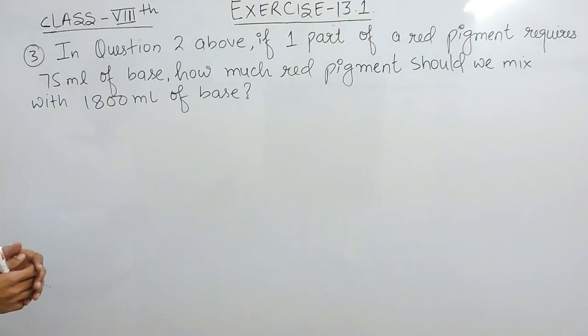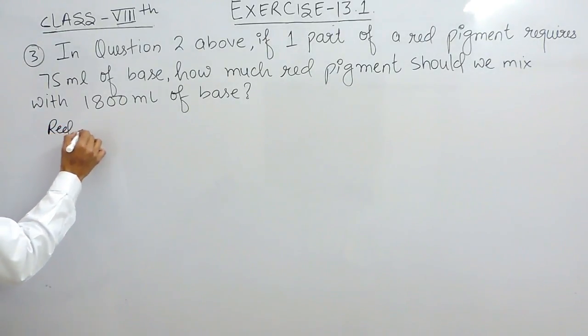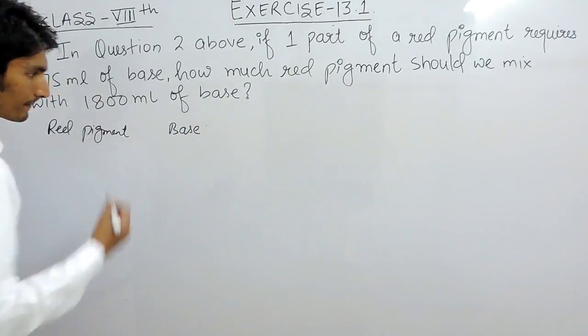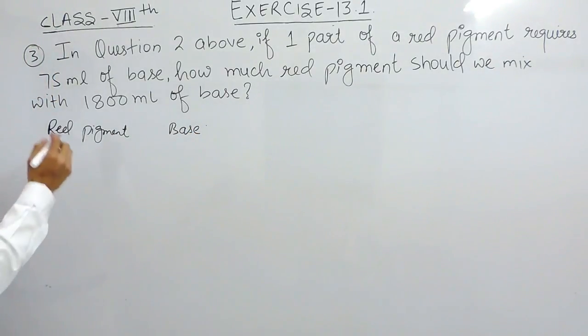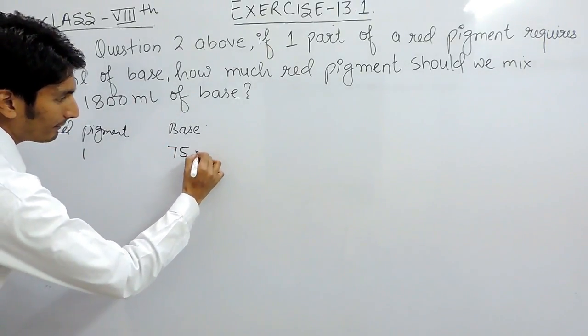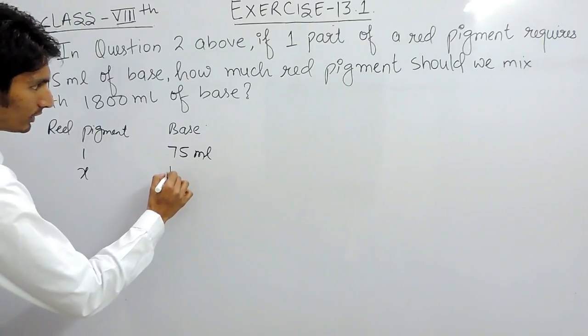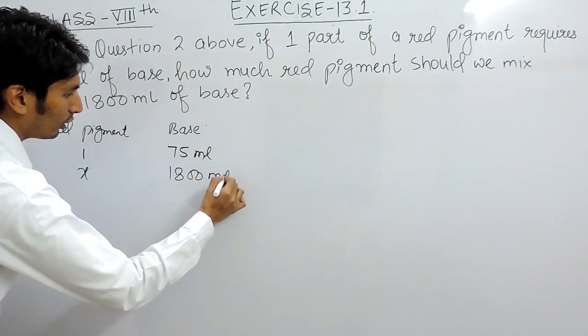We know that the red pigment and the base should be mixed in proportion. Solving this question can be done in three ways. First of all, there are two things: one is red pigment and second is base. It is given that if one part of red pigment requires 75ml of base, you have to find how much red pigment will be required for 1800ml of base.